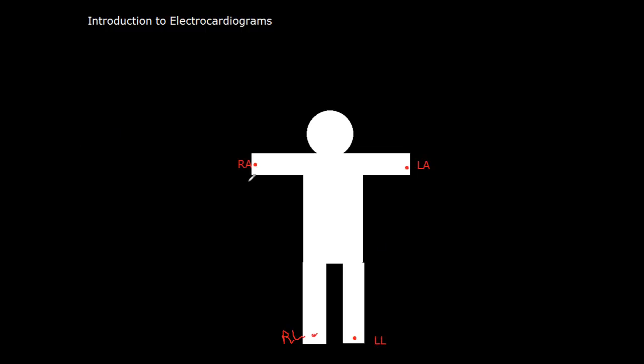And our last composite lead is going to be between the right arm and the left arm. That side is going to be negative. And it's going to go down to the left leg. It's going to be positive. So, and that's going to be AVF. And you can think of those as AVL for left, AVR for right, and AVF for feet.